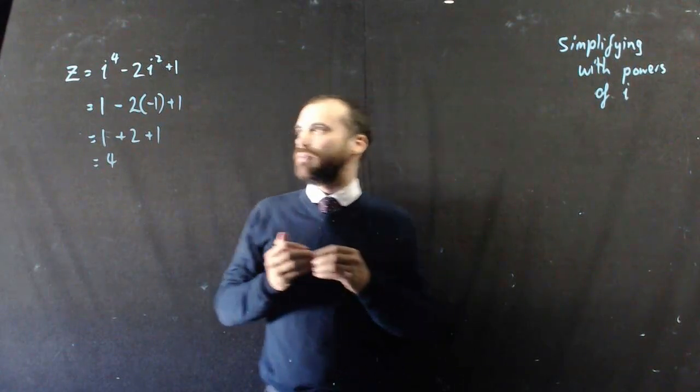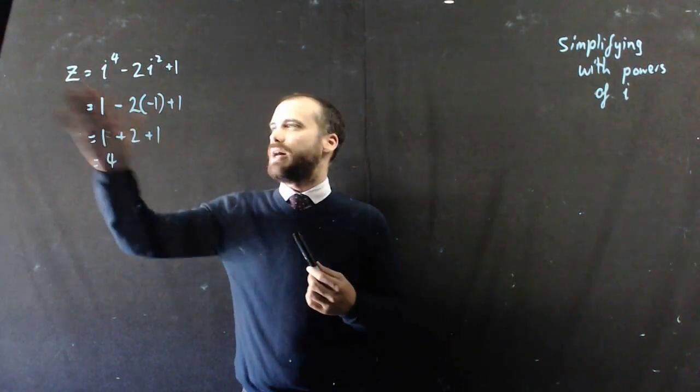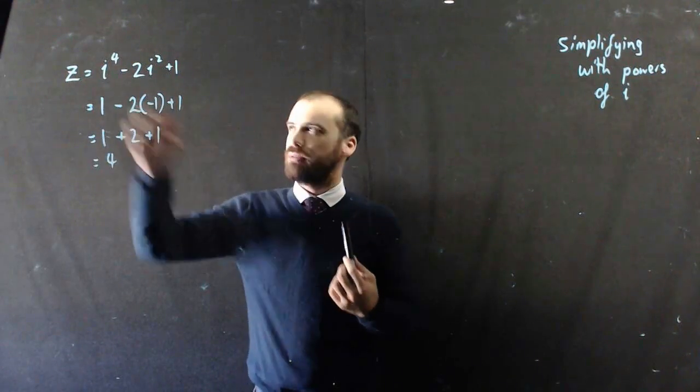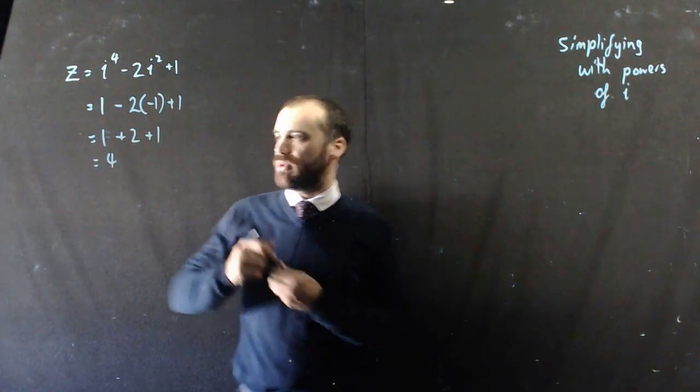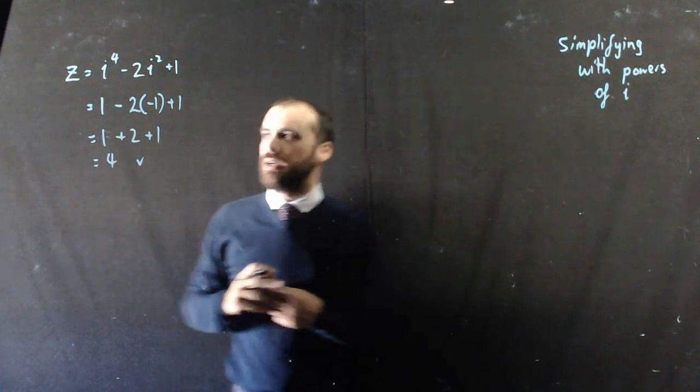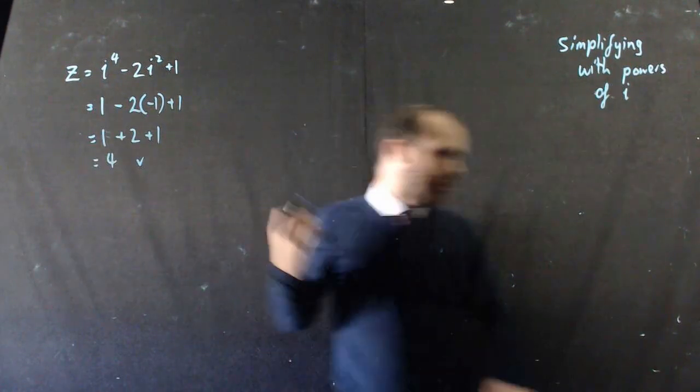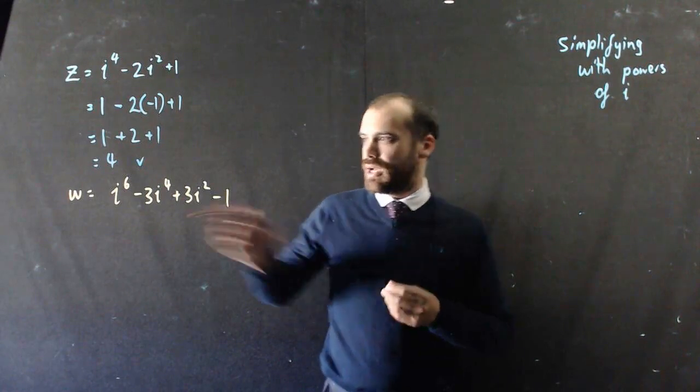Okay, what does that mean? Well, it looked like this was an imaginary number, but it's not because of these powers. And once we actually simplify it, we find it's a completely real number, z is equal to 4.